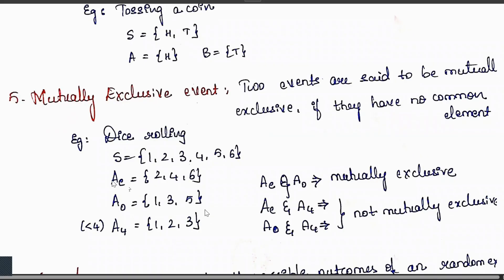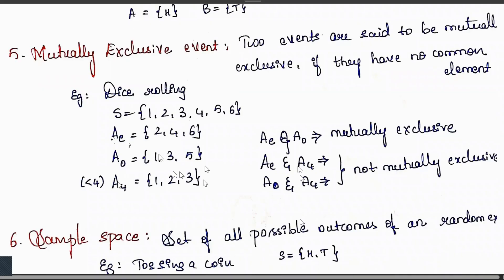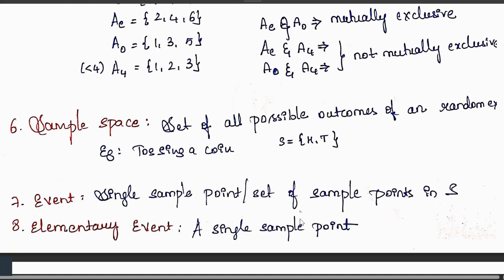When comparing even numbers and 'less than four' ({1, 2, 3}), the number 2 is common, so they are not mutually exclusive. Similarly, odd numbers and 'less than four' share 1 and 3, so they are not mutually exclusive either. Sample space is the set of all possible outcomes of a random experiment — for tossing a coin it is {Head, Tail}. An event is a single sample point or a set of sample points in a sample space; an elementary event is a single sample point.